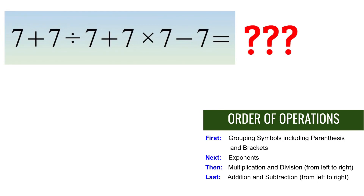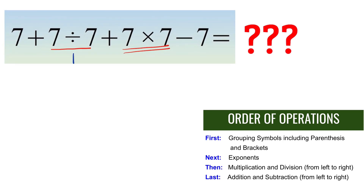We will simplify first the division and multiplication. We have 7 divided by 7, and 7 times 7. Simplifying from left to right: 7 divided by 7 is 1, and 7 times 7 is 49.